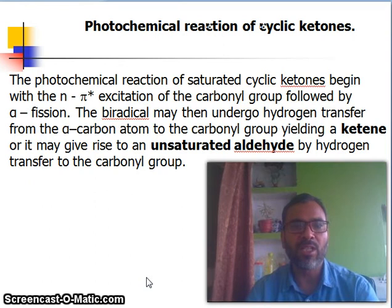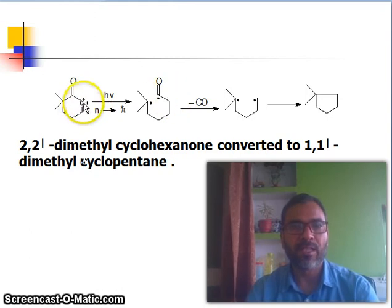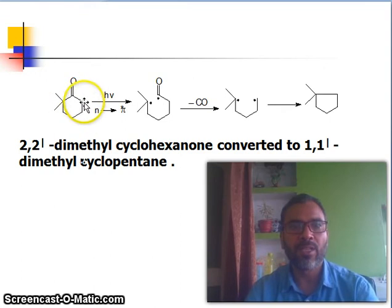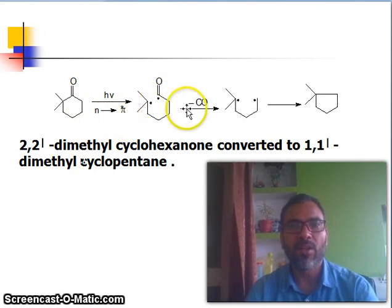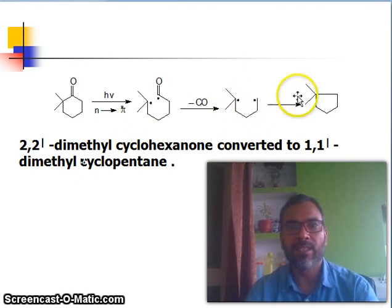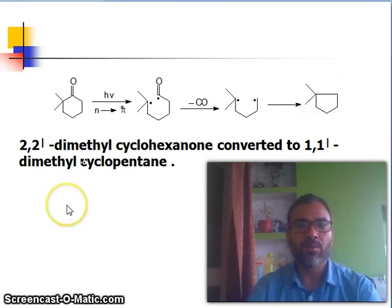Look at this diagram. Here is the alpha carbon without hydrogens, and here is the alpha carbon with two hydrogens. Under light, it undergoes n→π* transitions forming this bi-radical, and then removal of CO occurs. This radical then recombines, forming a carbon-carbon bond.